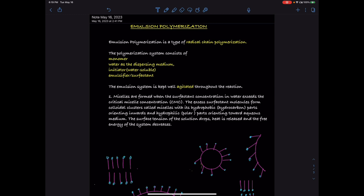The polymerization system consists of a monomer, water which is the dispersing medium, a water-soluble initiator, and an emulsifier or surfactant. The emulsion system is kept well agitated throughout the reaction.